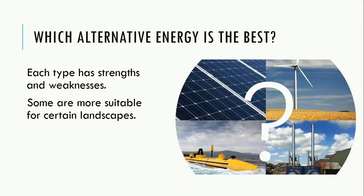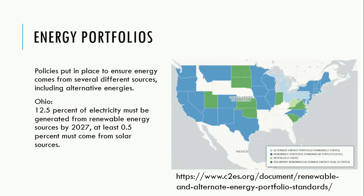There is no right answer to this question. Each energy type has its own strengths and weaknesses. Some energy types are more suitable for certain landscapes. It would make no sense to build a dam in the middle of a desert or to install large arrays of solar panels in areas with frequent overcast weather. Because there is no alternative energy that is the overall best, it is advantageous to use multiple energy generation types to power society.